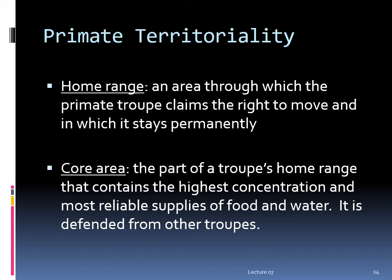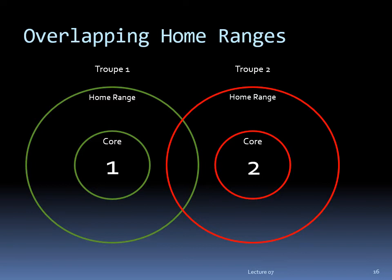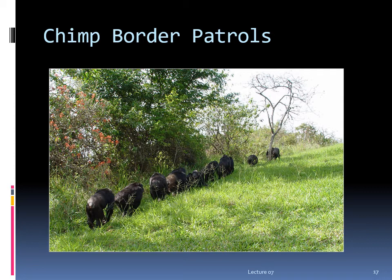Primate groups, especially ape troops, are territorial animals. A troop maintains a home range through which it claims the right to move and in which it stays permanently. Within the home range is a smaller core area, which contains the highest concentration and most reliable supplies of food and water. It is the core area that is actively defended against encroachment by other troops. When home ranges overlap and two troops encounter one another, there may or may not be violence. But foreign troops that encroach on another troop's core area will encounter much more violent attacks. Chimps have even been known to collectively patrol the periphery of their territory, hunting down and cooperatively attacking intruders from other groups. How this differs in substance from human warfare and borders is beyond me.